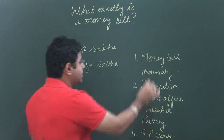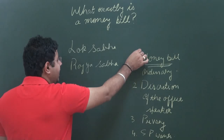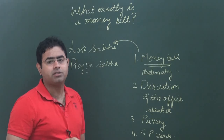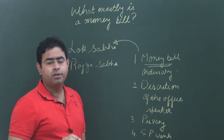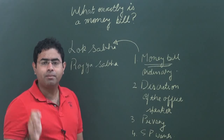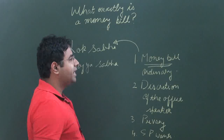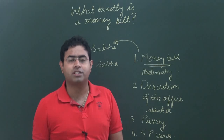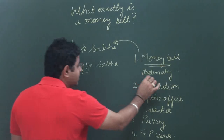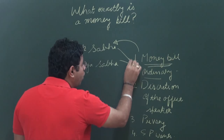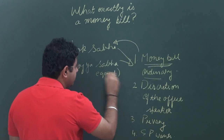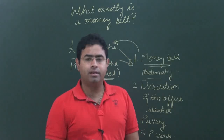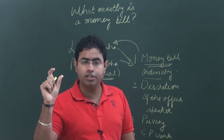As far as a money bill is concerned, this bill is required to be passed only by Lok Sabha. Rajya Sabha cannot stop the passing of such a bill — it can only discuss it, it cannot vote upon it or reject it. But when it comes to an ordinary bill, Rajya Sabha and Lok Sabha both have equal powers.